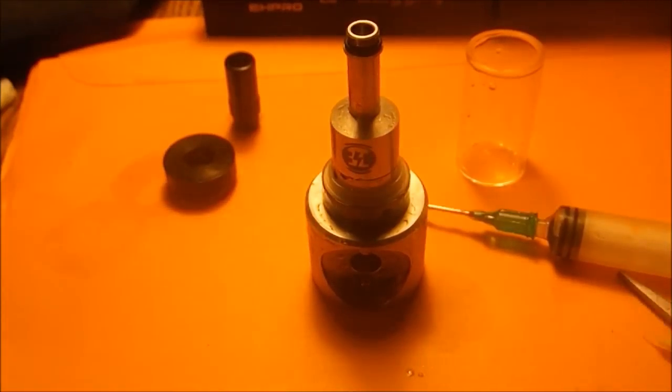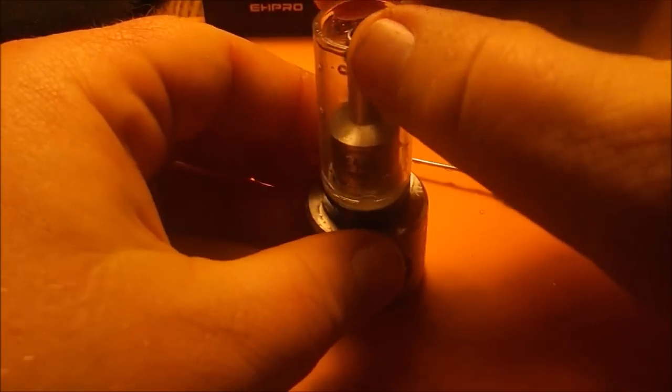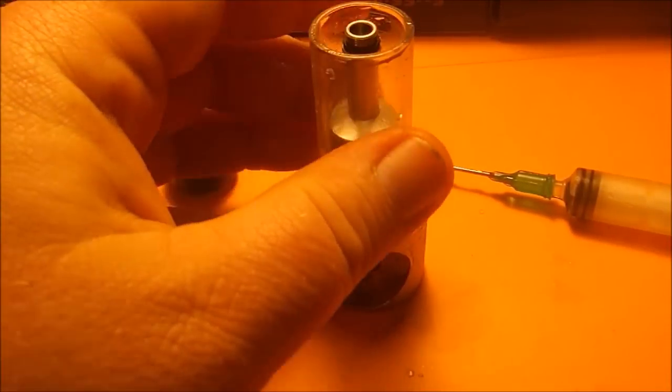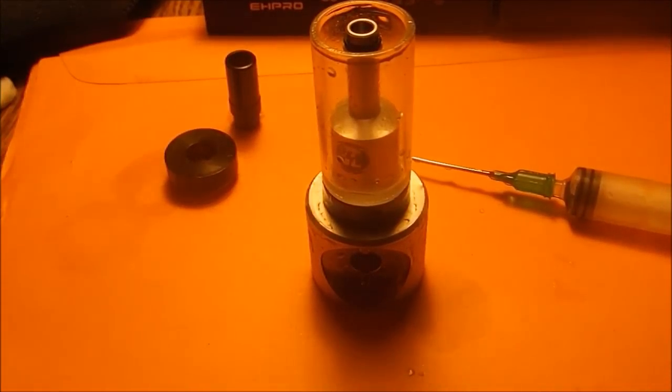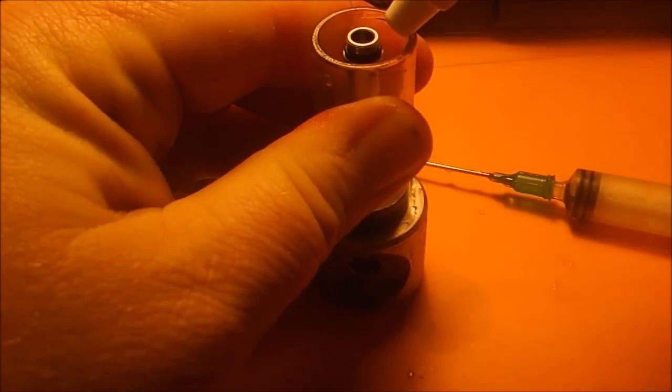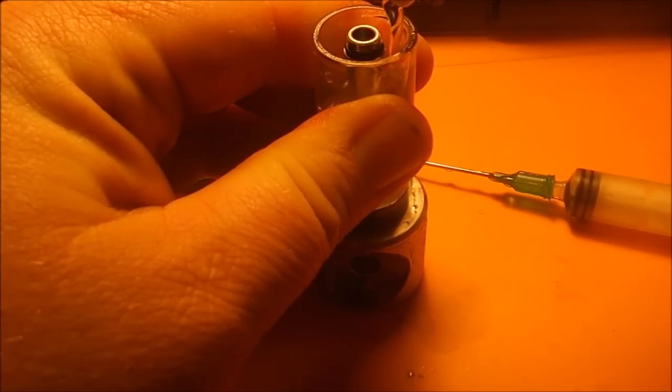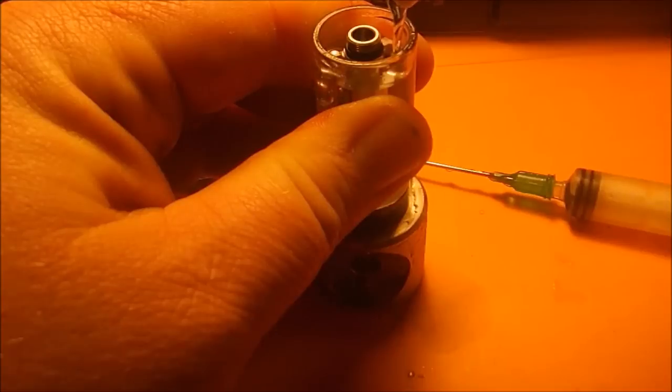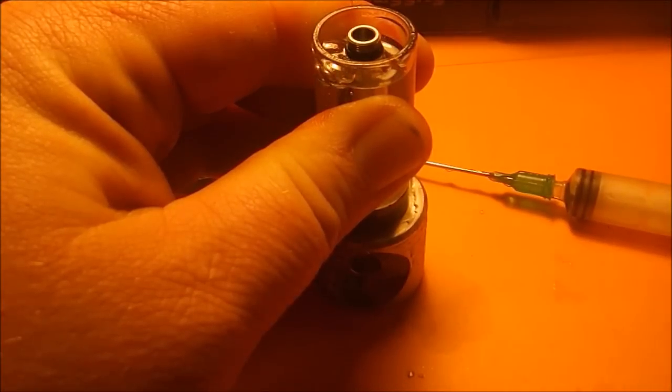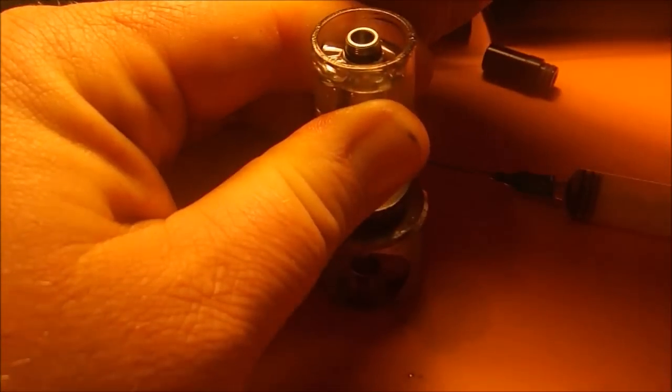Alright, so we got our coil in there, we got our cotton, put our tank on, down the gasket. Normally I would fill it from the bottom, but since it's apart I'm just going to go ahead and throw some juice in from the top, putting some Plume Juice in here, some strawberry custard. Top cap on.